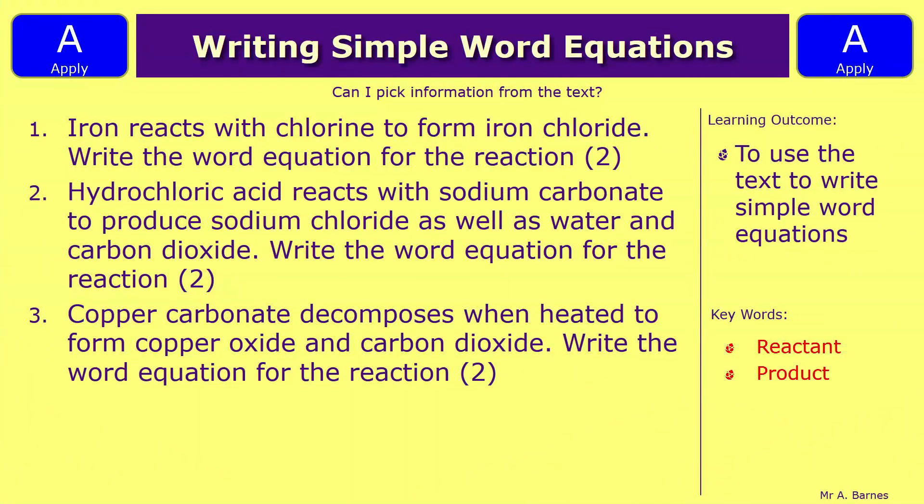Okay, we've got three word equation questions I'd like you to have a look at then. Number one is iron reacts with chlorine to form iron chloride. Write the word equation. So think it through. Iron reacts with, that's your plus, to form, that's your arrow, and there's only one product. So have a go at that one.